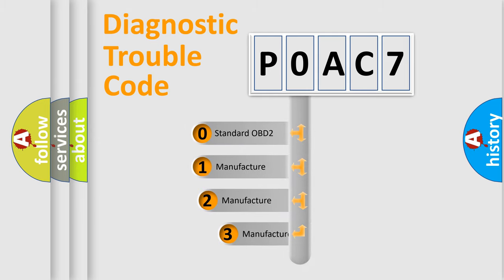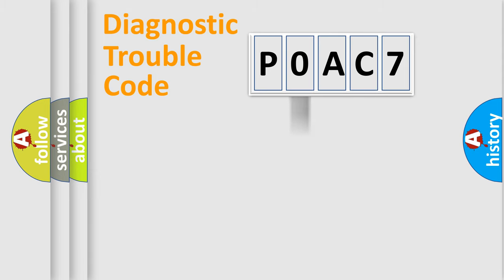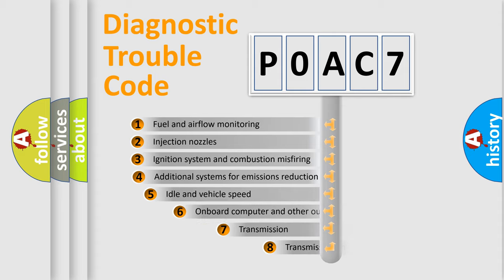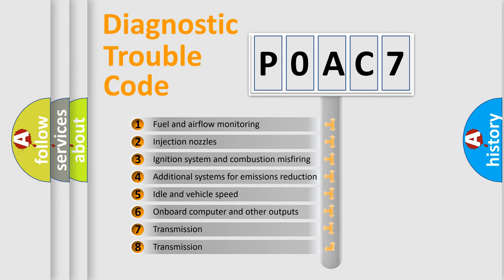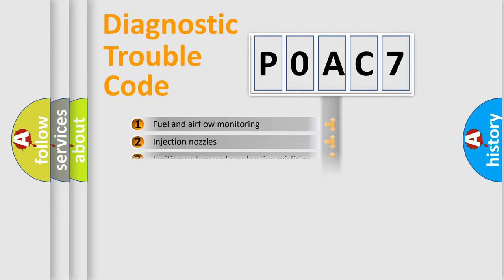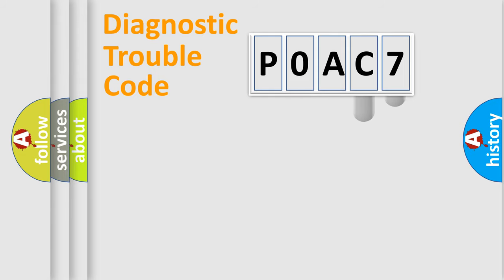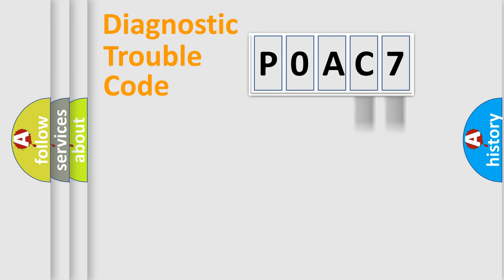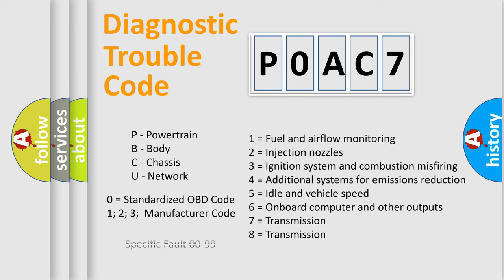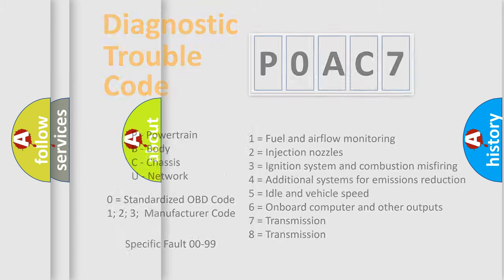If the second character is expressed as zero, it is a standardized error. In the case of numbers 1, 2, or 3, it is a more manufacturer-specific expression of a car-specific error. The third character specifies a subset of errors. This distribution is valid only for the standardized DTC code, where only the last two characters define the specific fault of the group. Note that such a division is valid only if the second character is expressed by the number zero.